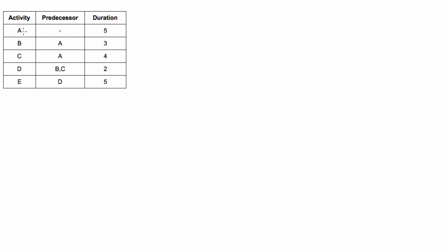Let's do a rough draft where we would have activity A. Let's do it up here. So we know that we're going to have activity A as the first activity, then B and C depend on A. They can't start until A is done.